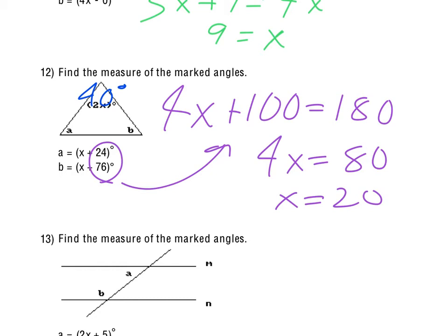A would be 20 plus 24, so 44 degrees, and B being the 20 plus 76, would be 96 degrees.